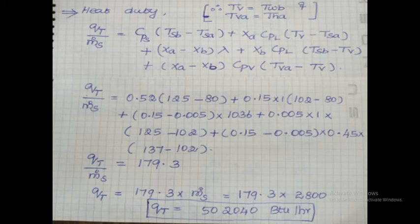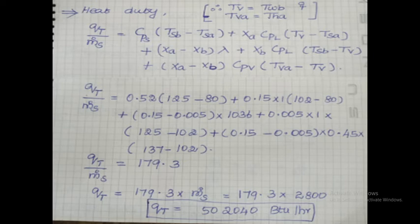Next, we are going to calculate the heat duty value. These equations are taken from my video about determination of length of dryer using the rate concept. QT divided by M-dot-S is equal to CPS, and these CPS values are given data: 0.52. TSB and TSA are the solid inlet and outlet temperatures — outlet temperature 125, inlet temperature 80.